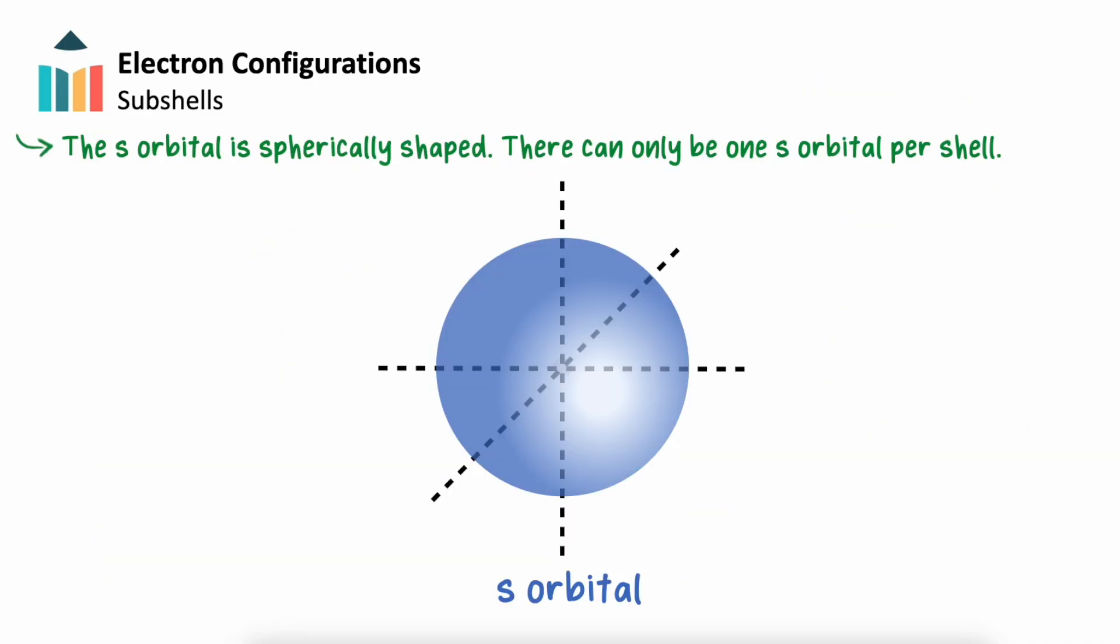S orbitals are spherically shaped. There can only be one S orbital per shell. Due to its spherical nature, there are no other orientations of the S orbital.